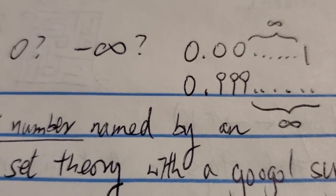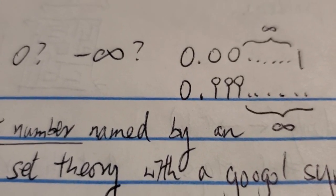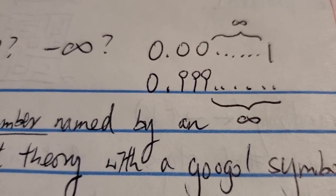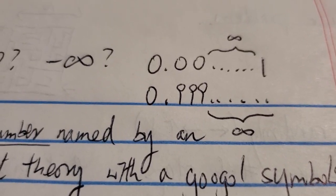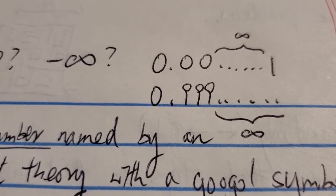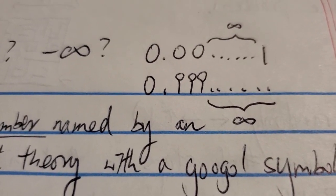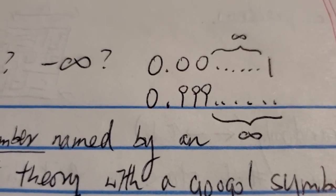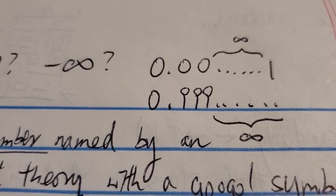This is easy to understand if you know set theory. There is an infinite number of numbers between any two numbers. When we talk about decimal numbers, there are an uncountable infinite number of them — not just countably infinite, but uncountably infinite. That means you cannot list them; they are unlistable. You cannot list all the real numbers because you're always missing something.